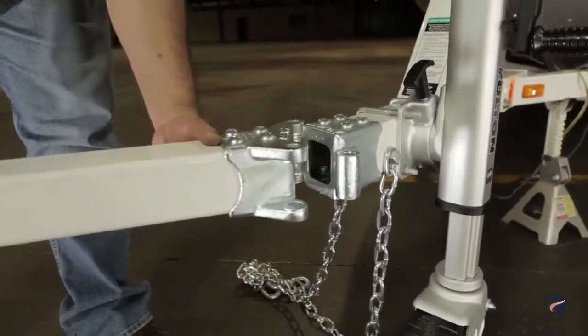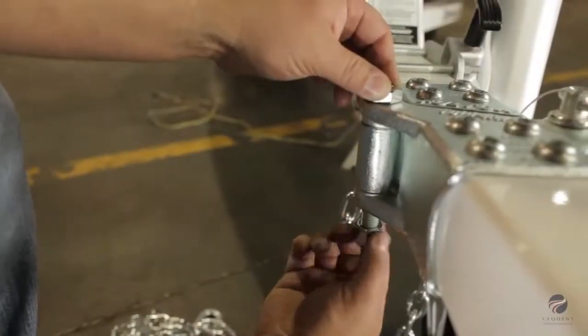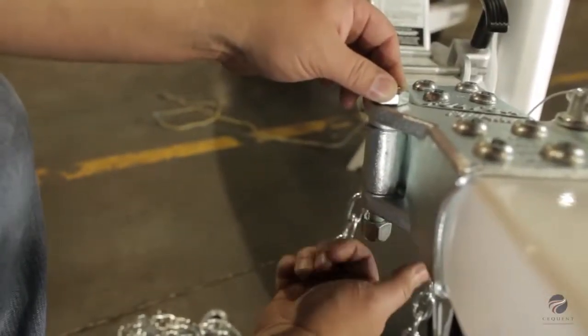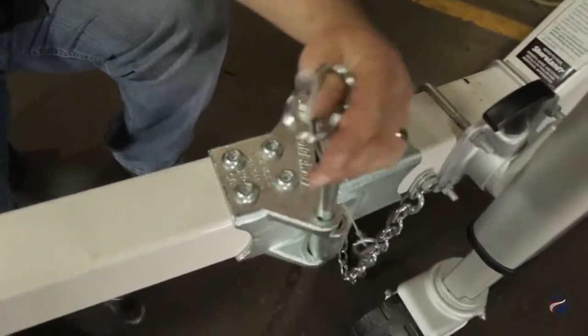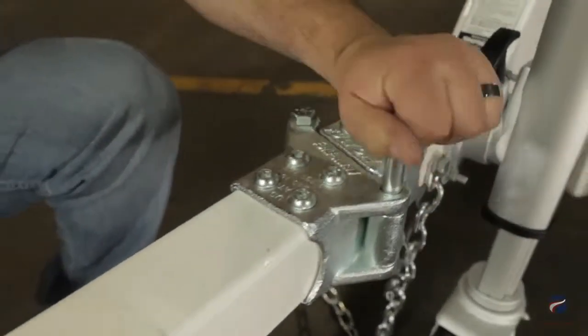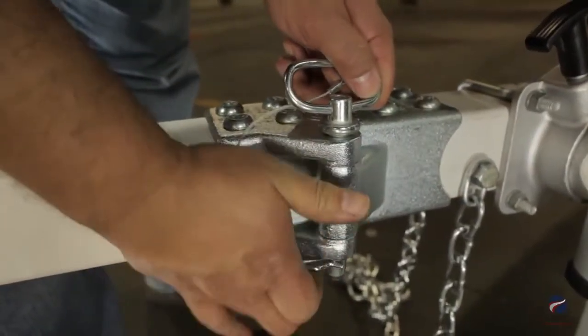Attach the swing tongue to the trailer tongue by mating the castings together. Apply light grease to the five-eighths inch pivot bolt and secure through the castings with a five-eighths lock nut. Torque to 50 foot-pounds. Insert lightly greased hinge pin and secure through the top of the castings. Secure hinge pin with hairpin cotter.